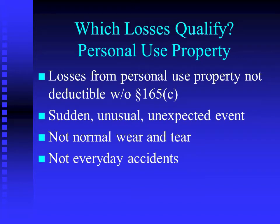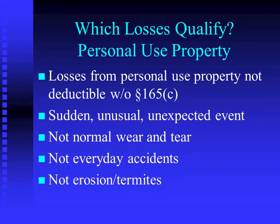Not everyday accidents either. Your kid parks his bike in the driveway, you run over it — that would not create a casualty deduction. You are washing dishes, you take your diamond ring off, it falls into the garbage disposal — that is presumably an accident that might not qualify as a casualty, but the dollar amount might be big enough that you'd want to research that one. Not things like erosion or termites, because they take a long time to happen, and a responsible homeowner is expected to take care of those things.